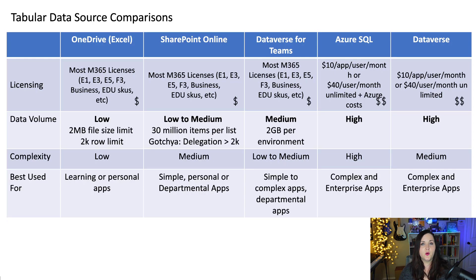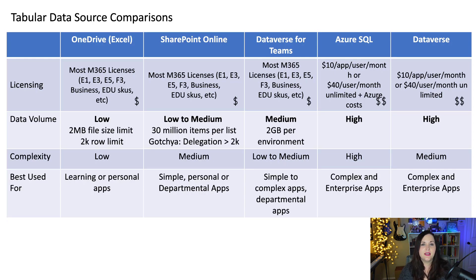From a complexity standpoint, Excel is very low since most people have used it. For licensing, to use Power Apps at all you need a minimum of a Microsoft 365 license. Several licenses include a seated version of Power Apps — E1, E3, E5, some first-line worker SKUs, business SKUs, and education SKUs. For Excel, all you need is one of those Microsoft 365 licenses. For data volume, Excel is pretty low — we're limited to a two-megabyte file limit, and within Power Apps we have a row limit of 2,000 rows.